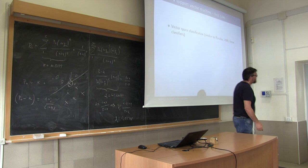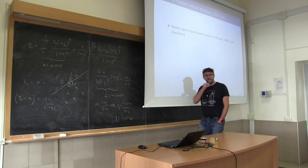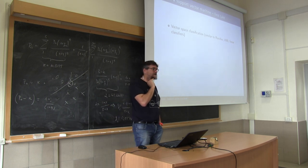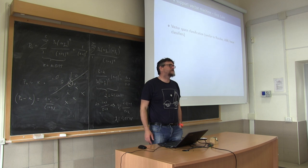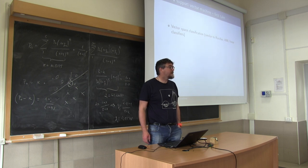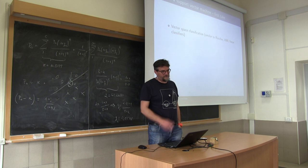SVM works, as KNN and the linear classifier, with vectors. So we are in the vector space — documents can be represented as vectors. What did we do in order to transform documents into vectors? The bag of words. You use TF-IDF in order to build a vector representation of the documents. You basically have a weight for each term in the collection, and represent the document as a vector with that weight.